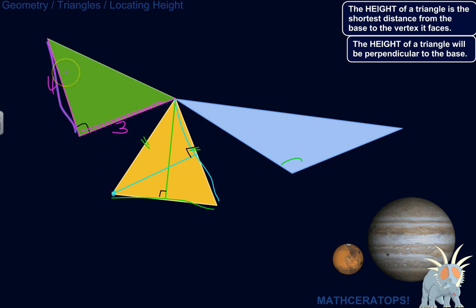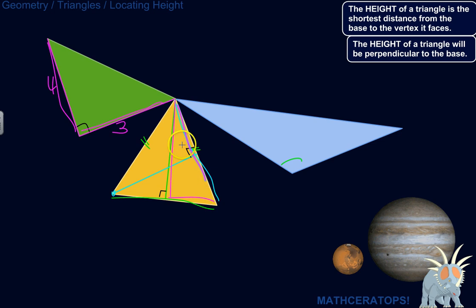That's probably the easiest, because it's just right there. For the other orientations, you would have to use the Pythagorean theorem. If you knew the side lengths, you could use the Pythagorean theorem — see how this forms a right triangle? If you know this side and you know this side, you could figure out this side and find the height.